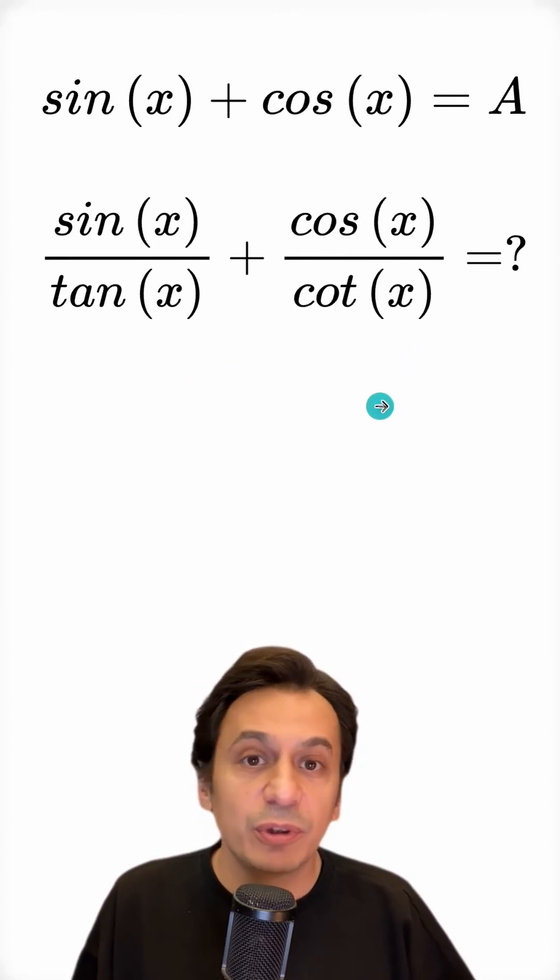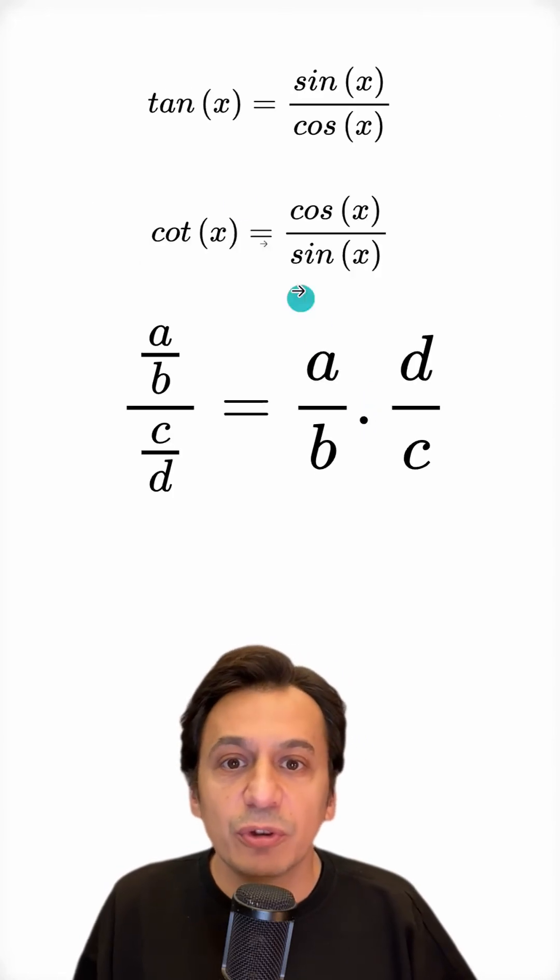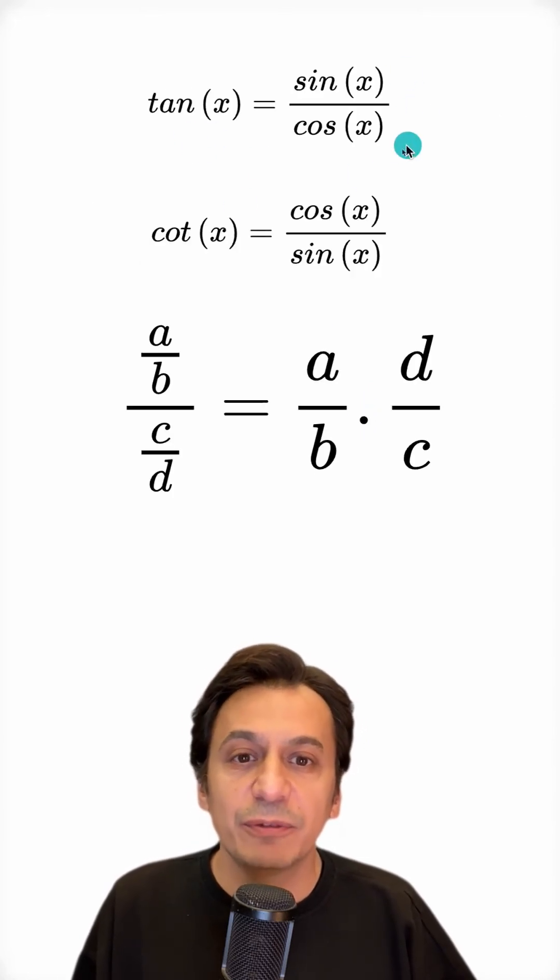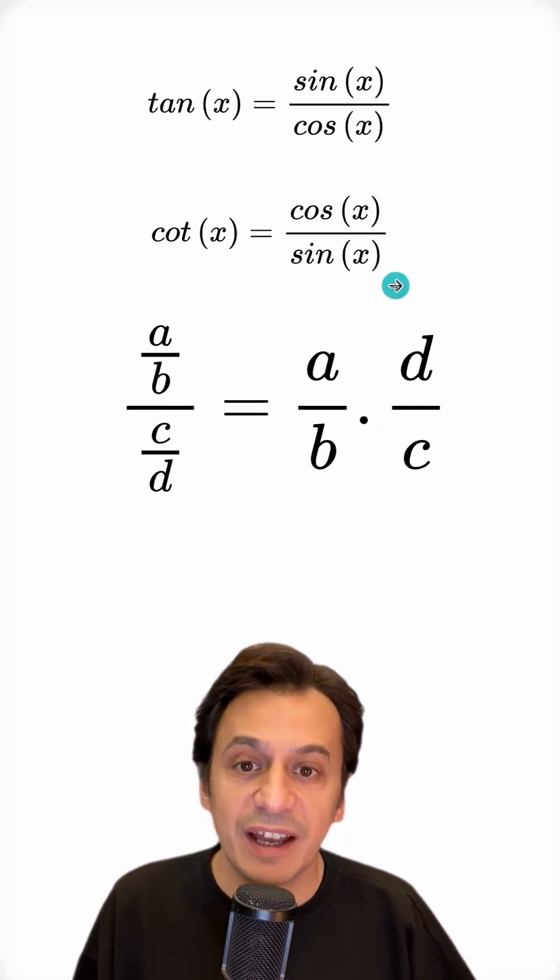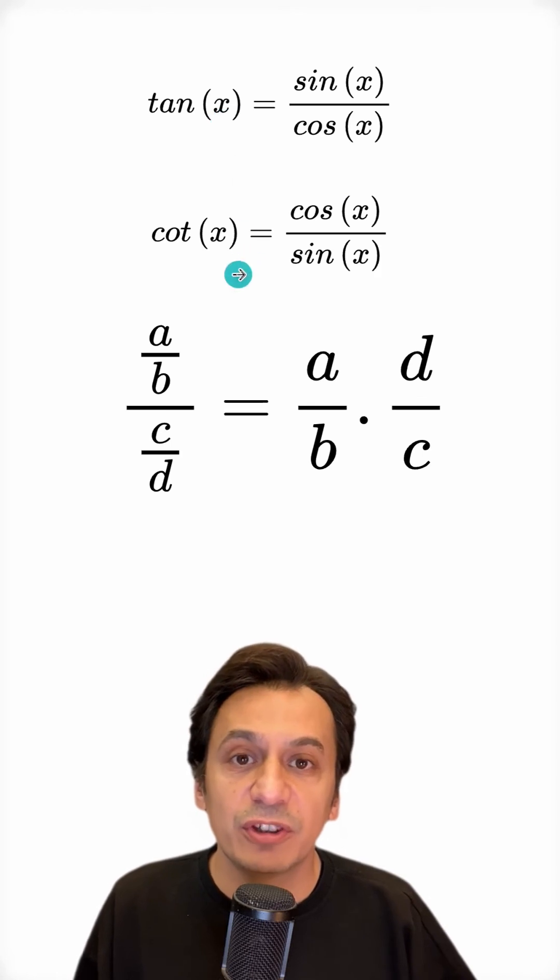First, let's see what information we need to know in order to solve this question. Tangent x is sine x divided by cosine x. Cotangent x can also be written as cosine x divided by sine x. These are the tangent and cotangent identities.